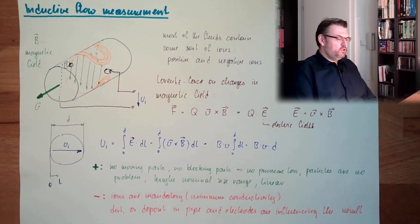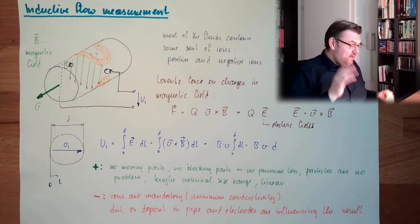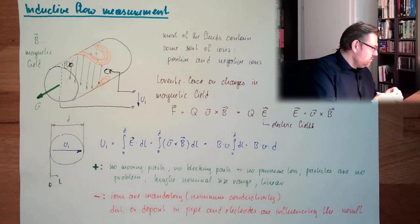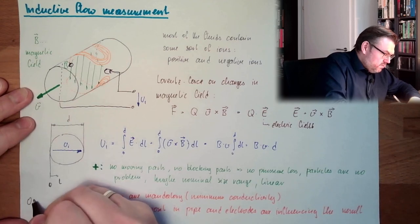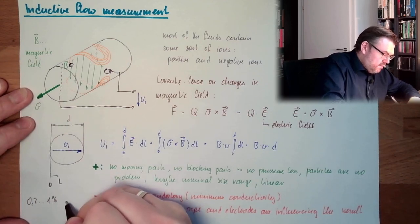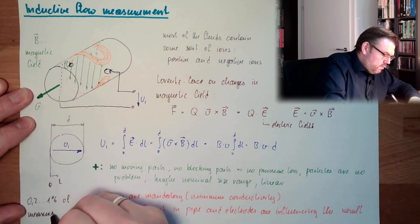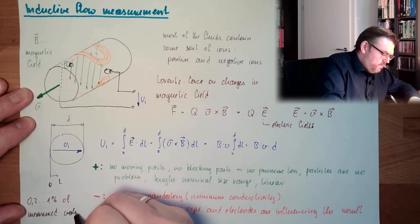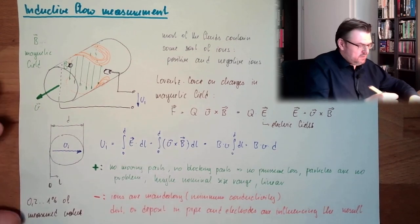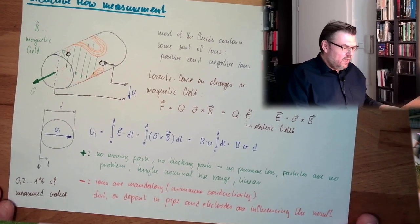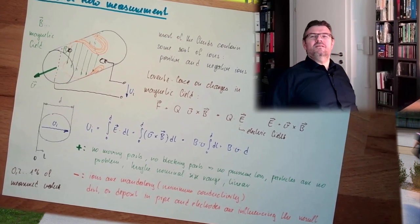Inductive flow measurement. That's the principle of inductive flow measurement. Accuracy, we have around 0.2 to 1% of measured value. Now, this is inductive flow measurement.